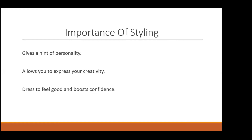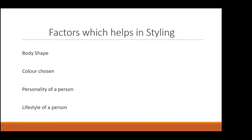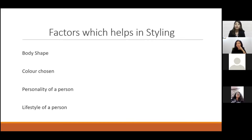Now let's look at how styling changes as per different factors. There are four factors: first, body shape; second, color — including your attire color and personal colors; third, personality; and lastly, lifestyle — whether you're going for a red carpet event, office wear, or a casual outing. Your styling will keep changing as and when required.